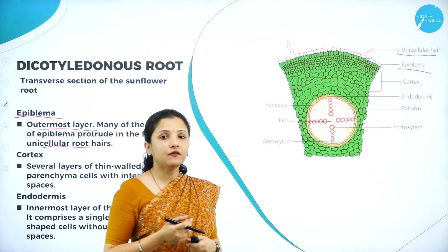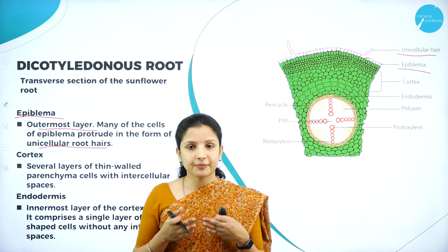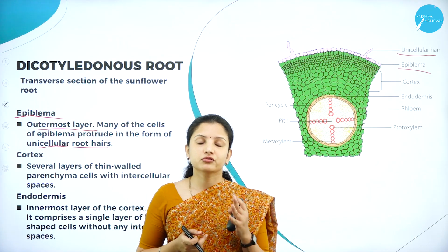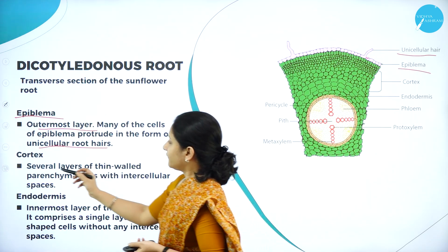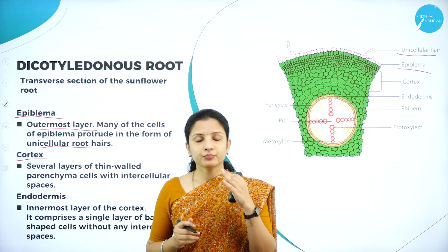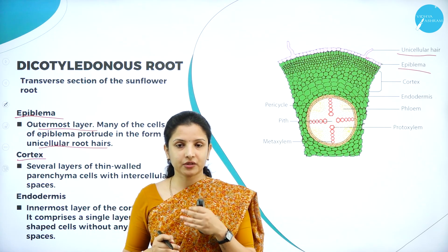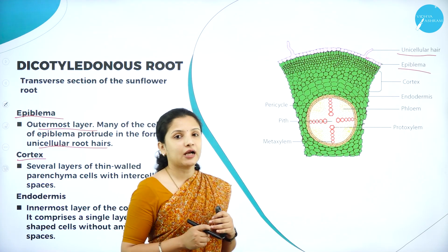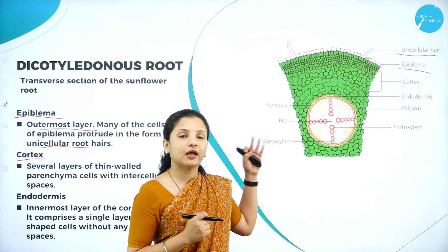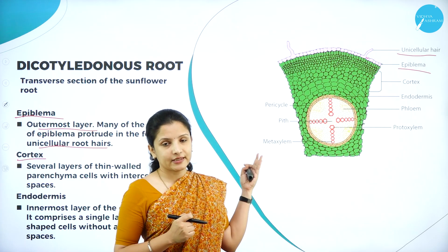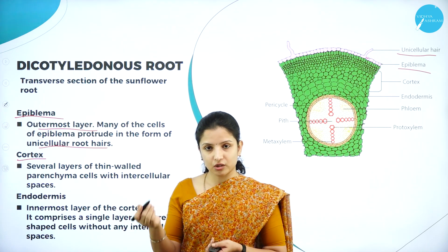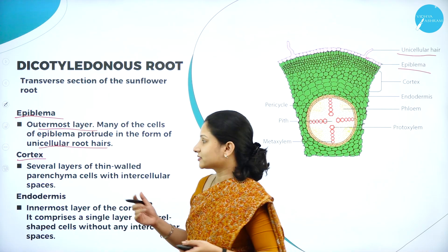One important thing to notice is that because this is a root, there is an absence of stomata in the epidermal cells. Stomata is usually present in the leaf. Also, before the epiblema, there would normally be a cuticle — a waxy covering — but the cuticle is absent in roots; it is present in stem and leaves. Therefore, in the roots, there is no cuticular layer present above the epiblema. Right after the epiblema, the next layer is the cortex.